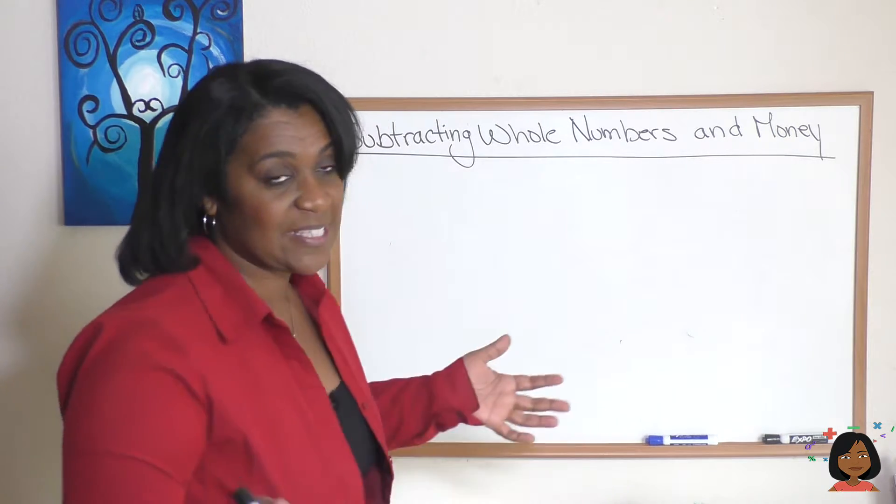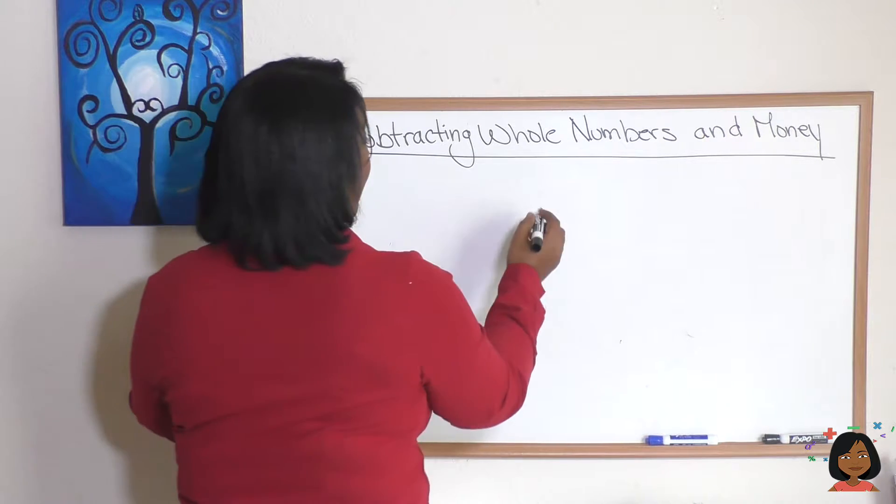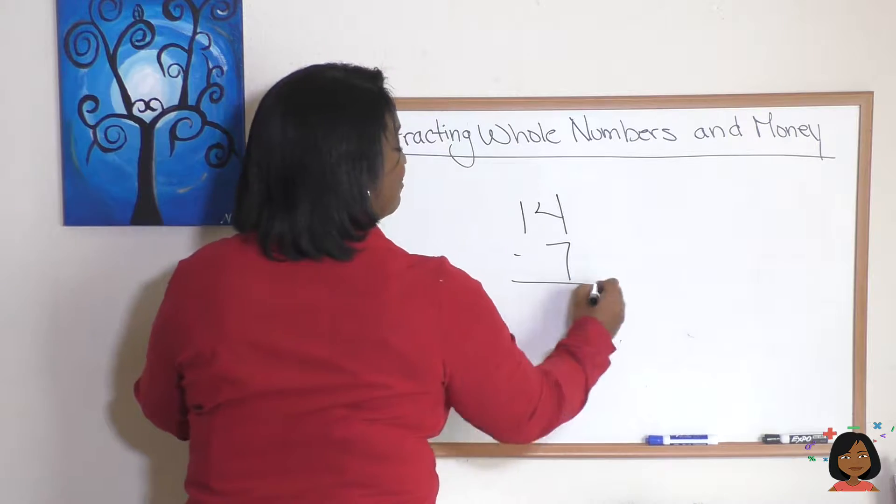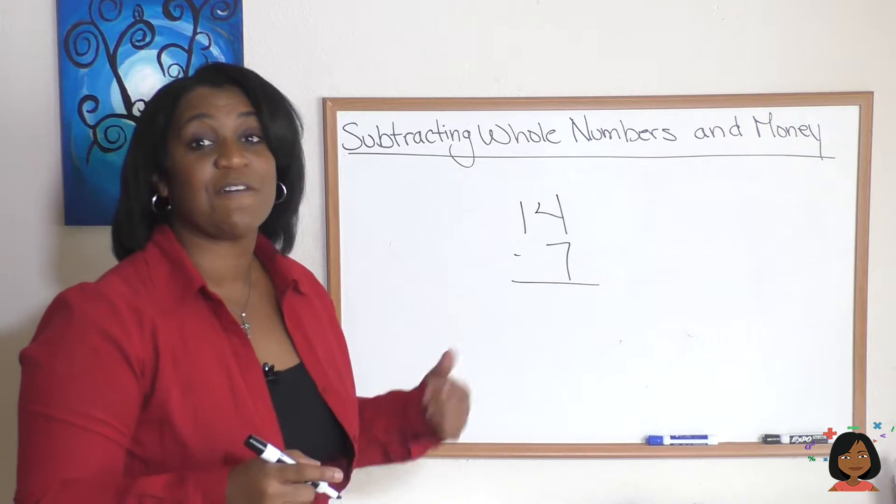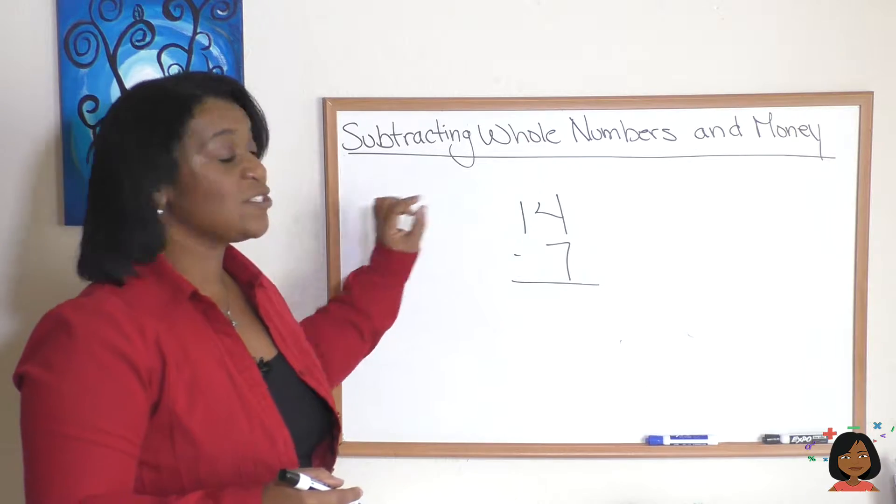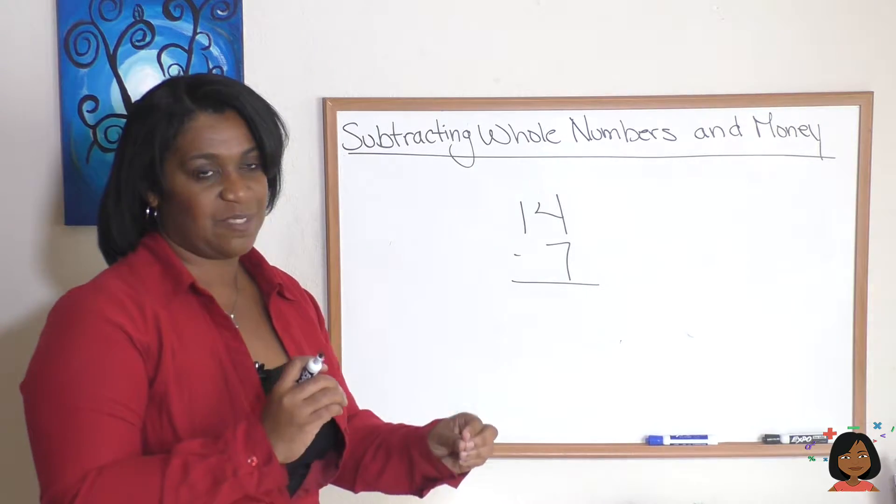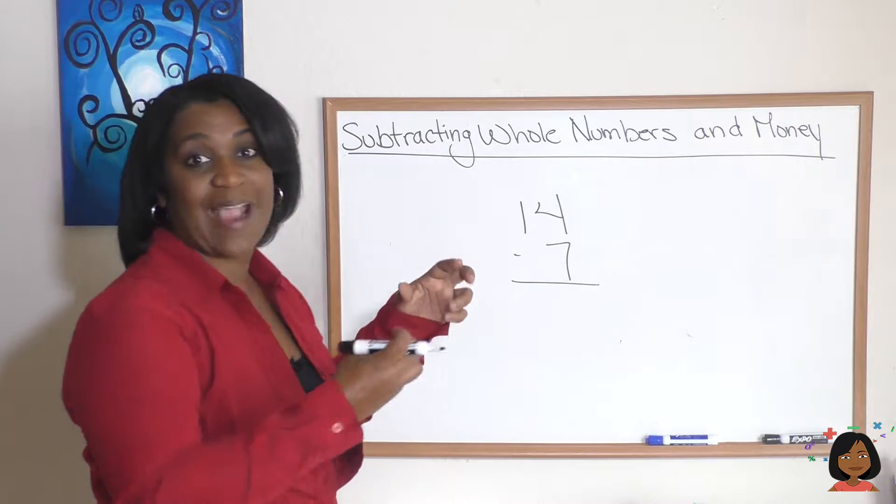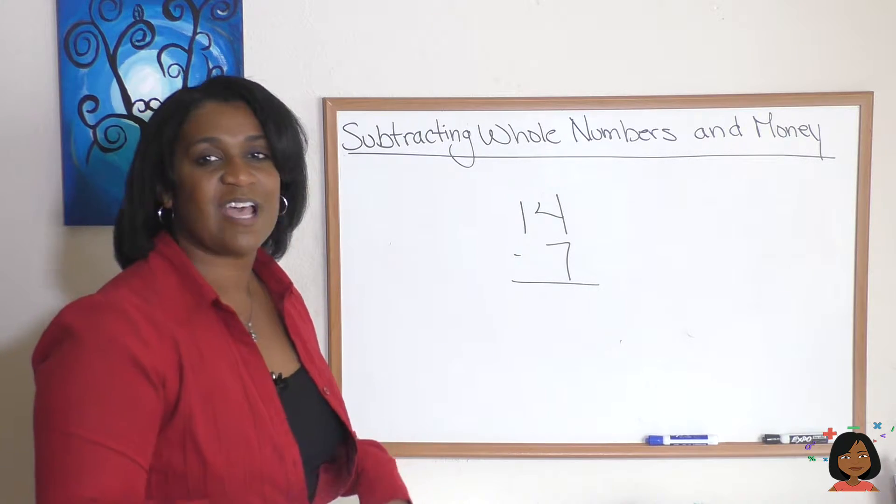I'm gonna pick some easy numbers to start with, how about 14 minus 7. Before I do the math I'm going to introduce some definitions to you. In subtraction these two numbers have different names. The top number, the number that we are subtracting from, is called the minuend.